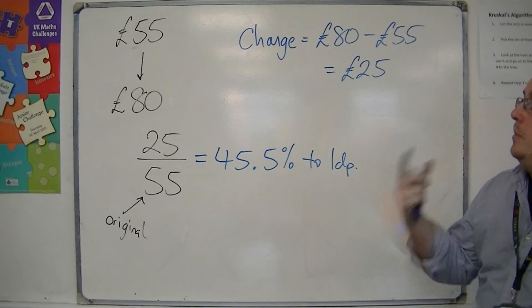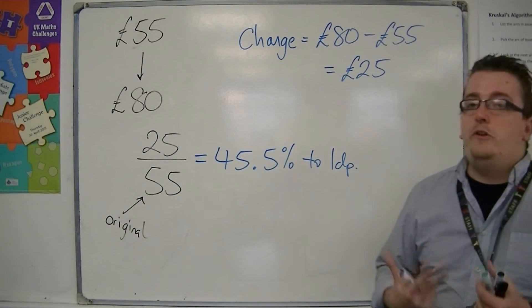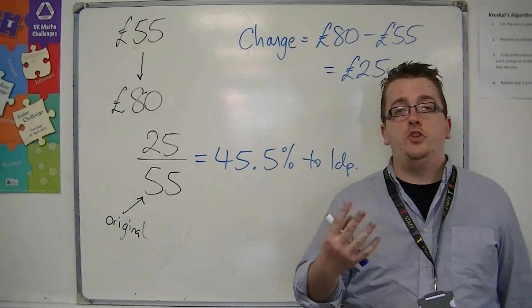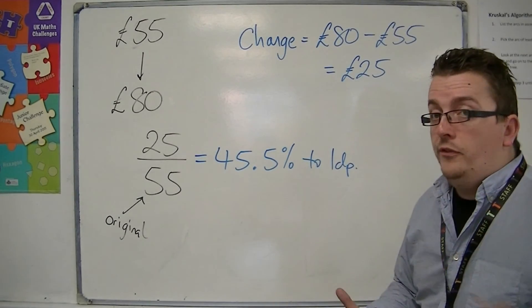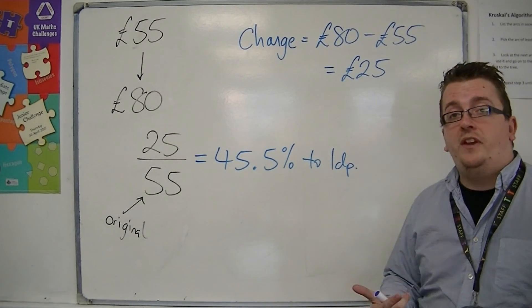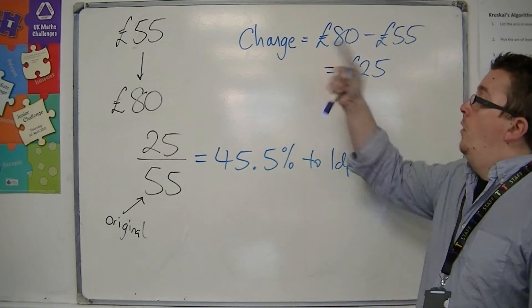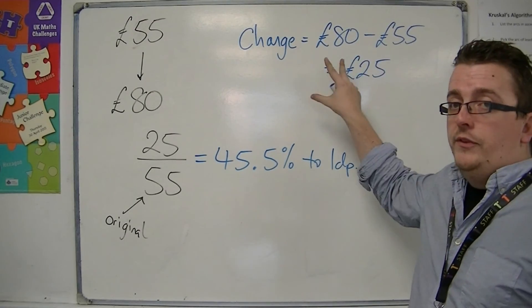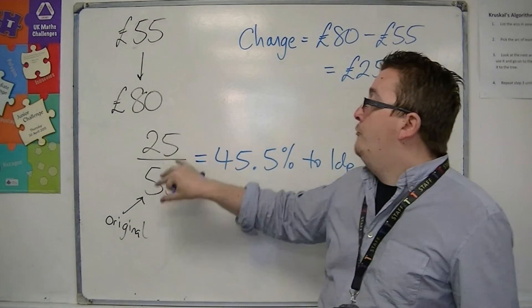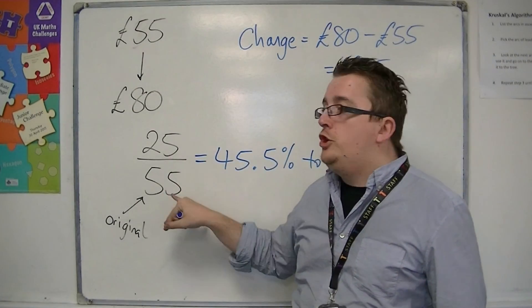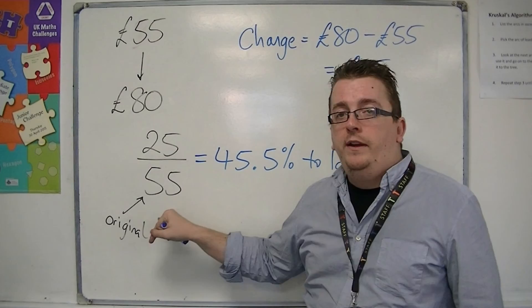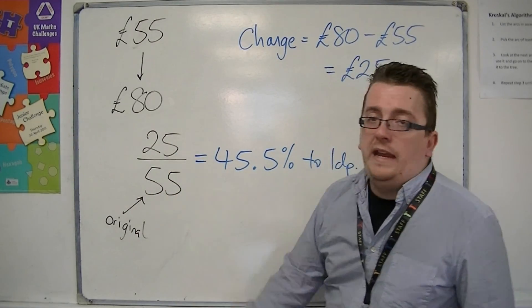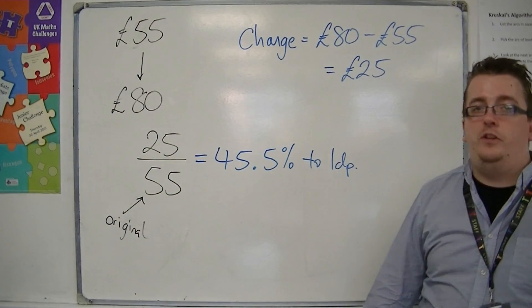Here are a couple of examples of how you can work out the percentage change, and the process is always the same: work out what the change is first, write that as a fraction of the original amount, and convert that fraction into a percentage.